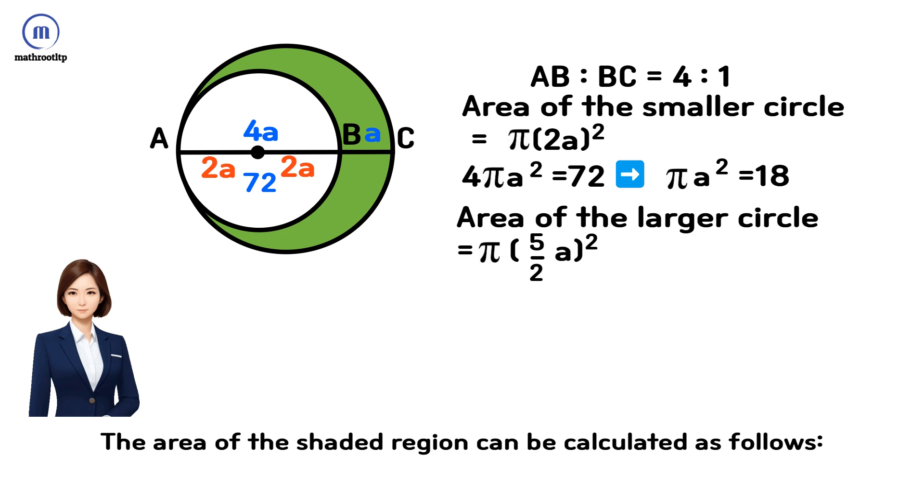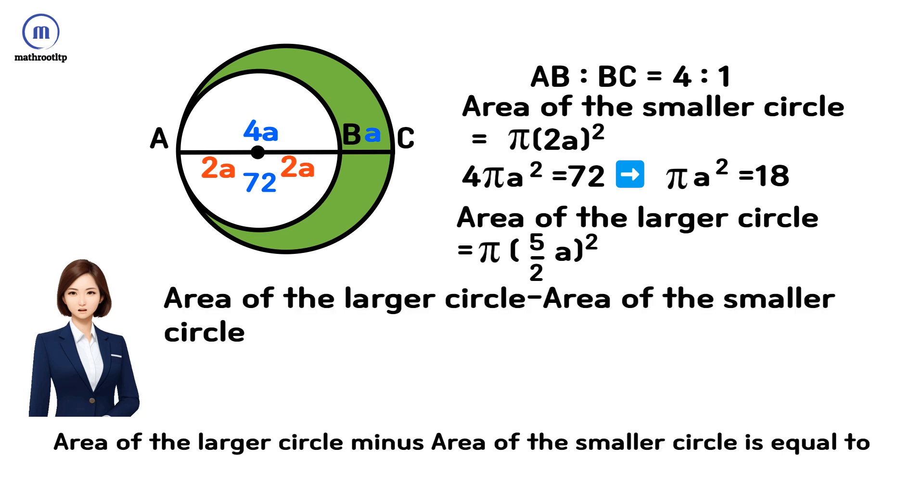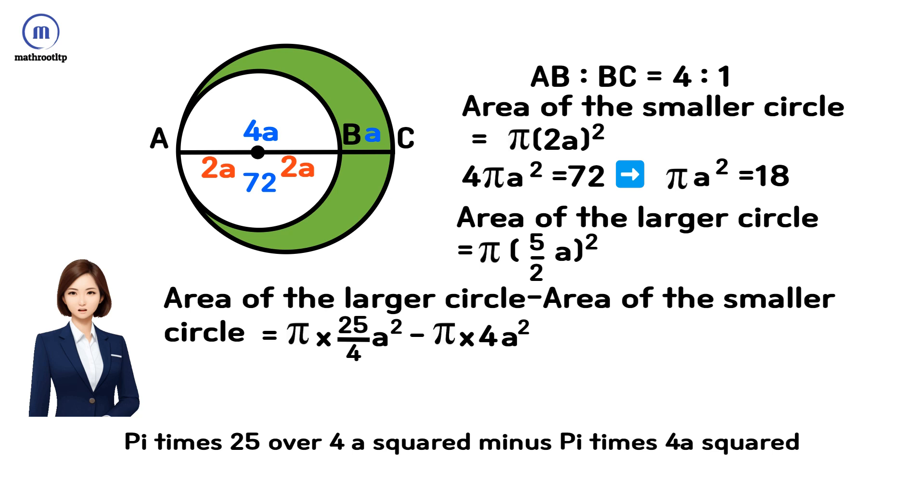The area of the shaded region can be calculated as follows: Area of the larger circle minus area of the smaller circle equals π(25/4)a² - π(4a²), which is π(9/4)a².